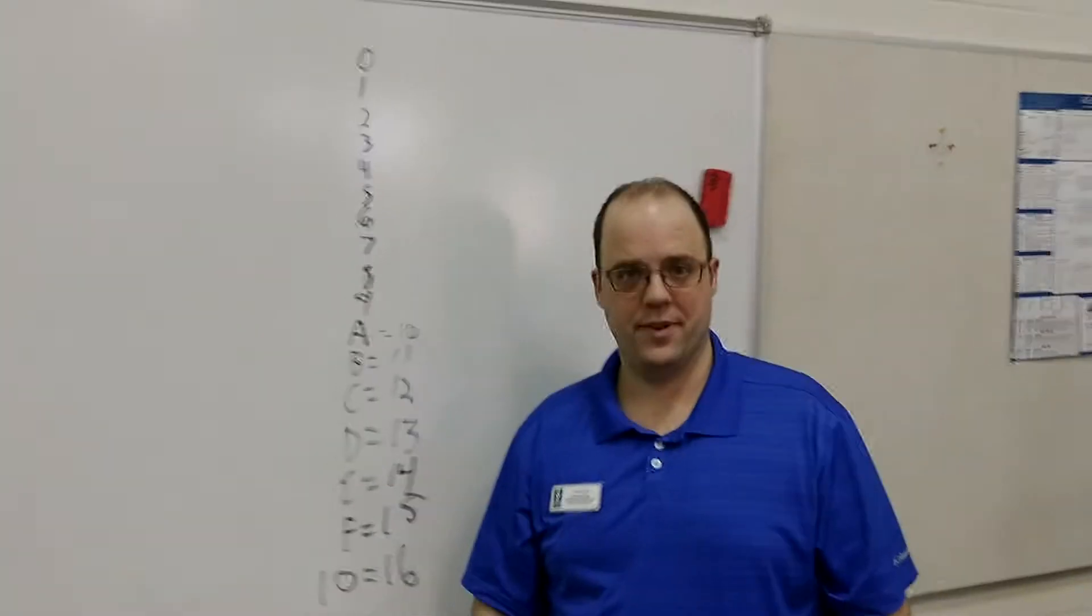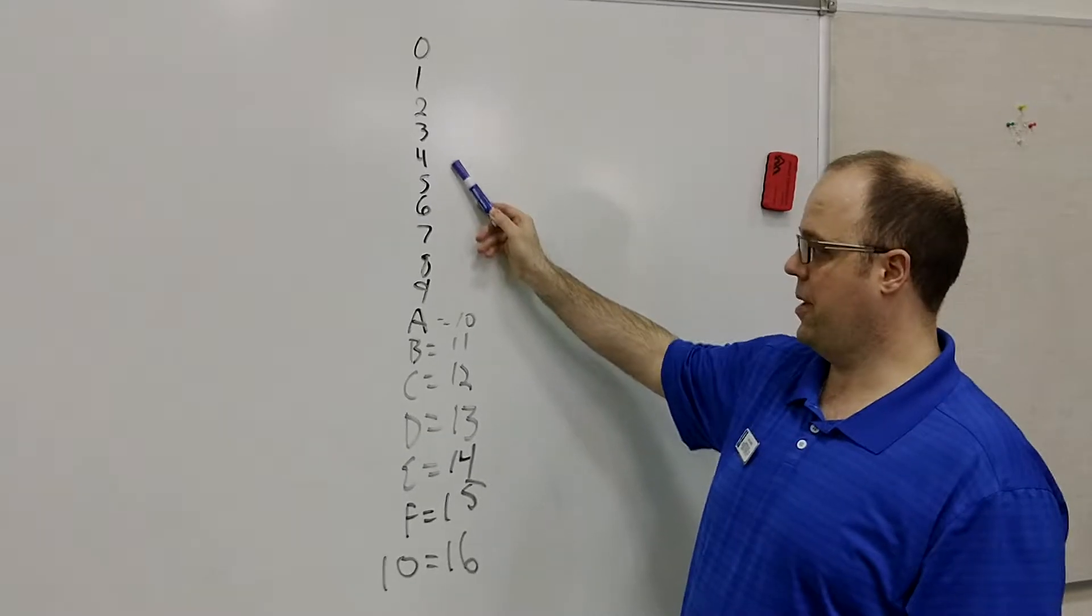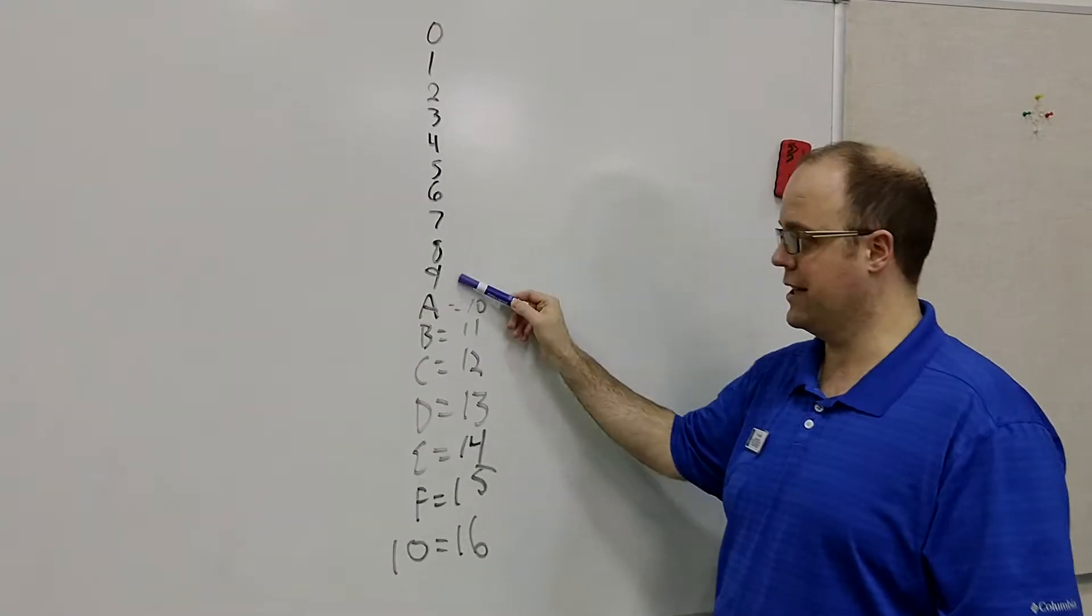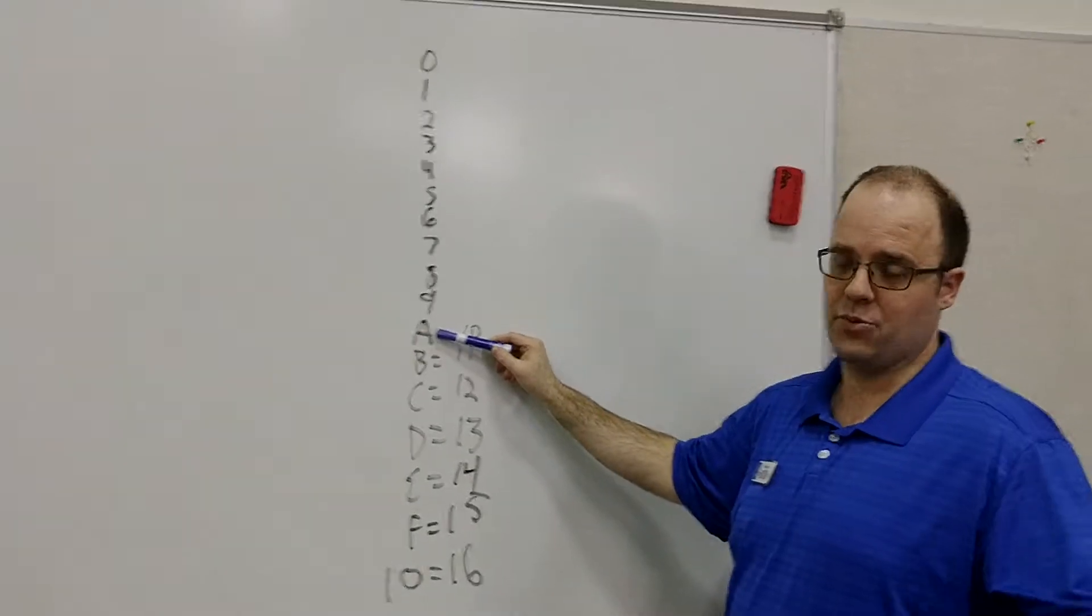I want to remind you about hexadecimal. If I'm counting in hexadecimal, I start at 0 and just keep going up, up, up, up, up until eventually when I get to 9, that turns into A. Why? Because why not?